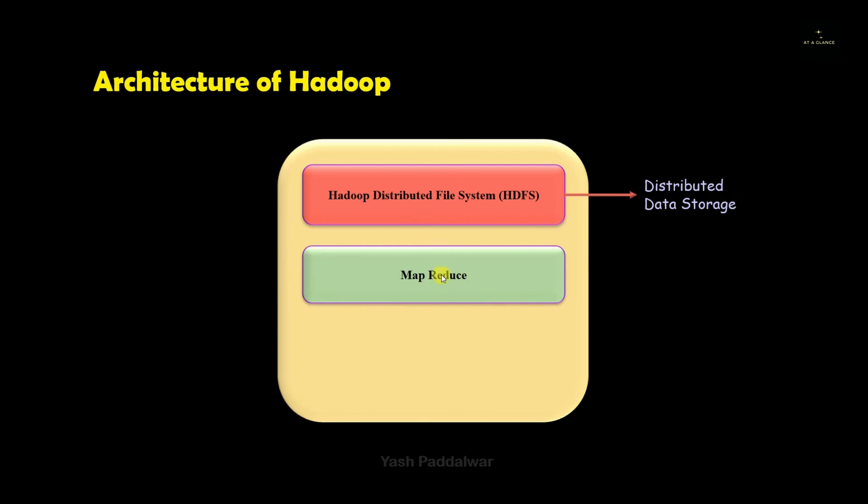The next component inside the architecture of Hadoop is MapReduce. MapReduce is used for the processing of the data that is stored in the distributed manner. As I said that the big data is divided into different blocks. Each block will be associated with a processor and that processor will process the data and will give the output.